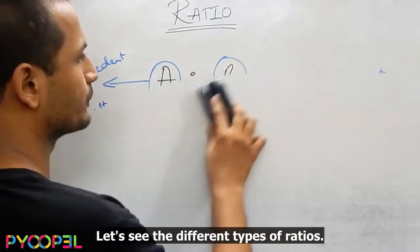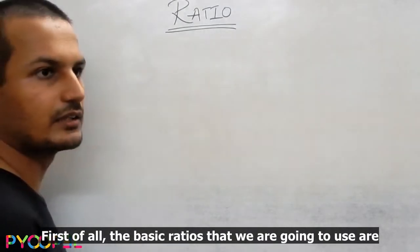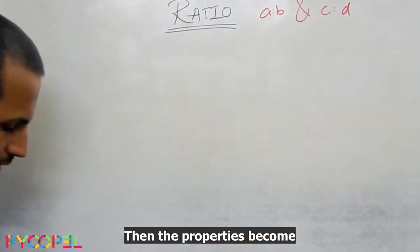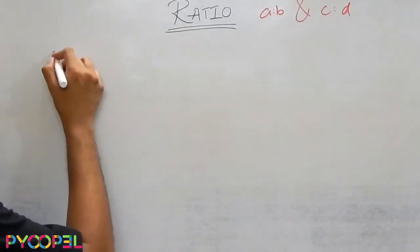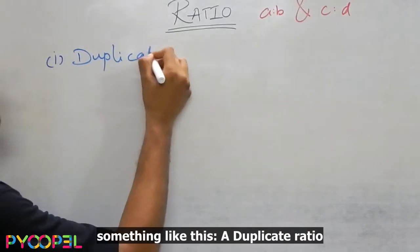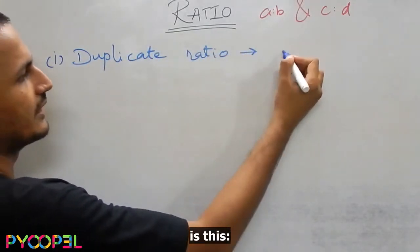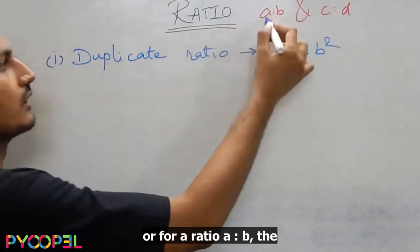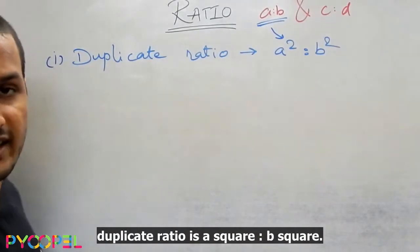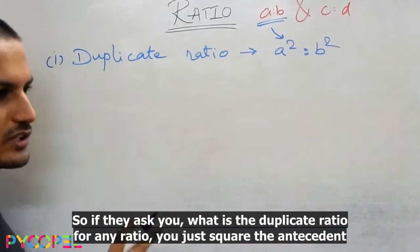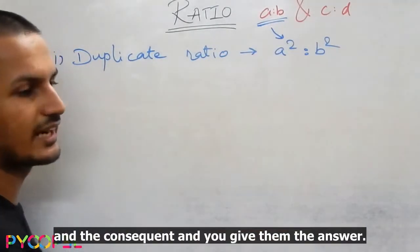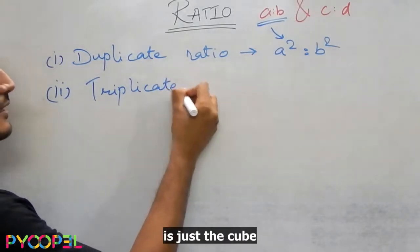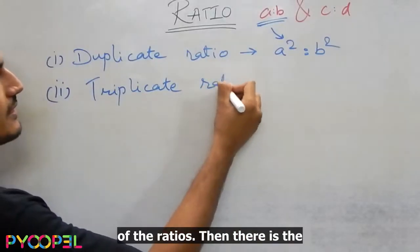So now this is some basic about ratio. Let's see the different types of ratio. First of all, let's say the basic ratios that we are going to use are A is to B and C is to D. Then the properties become something like this. A duplicate ratio is this: A square is to B square.